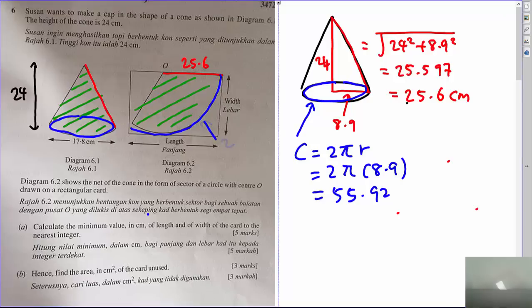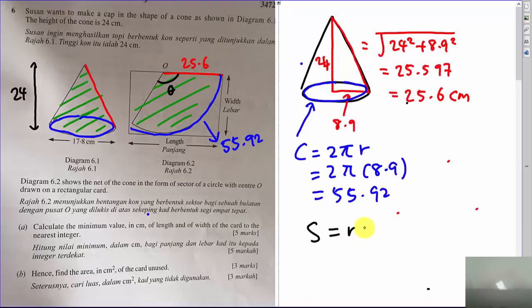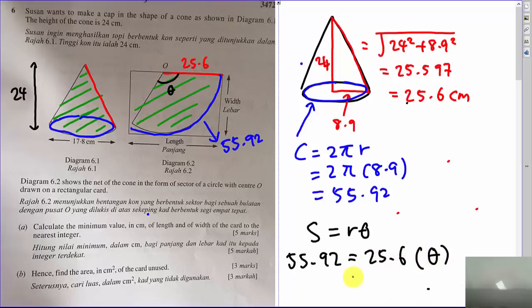Since I have the arc length and the radius, I can find the angle using the arc length formula s = rθ. My arc length s is 55.92 and my radius is 25.6. Dividing: 55.92 ÷ 25.6 gives my angle θ = 2.1844 radians.